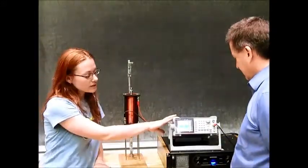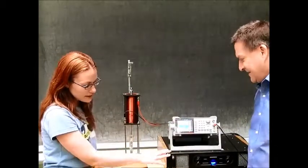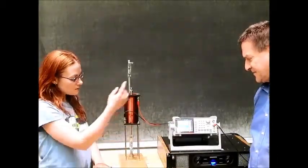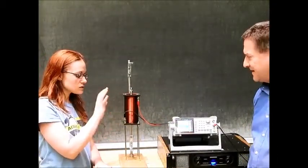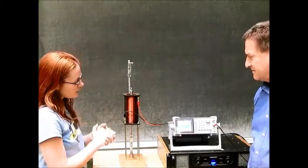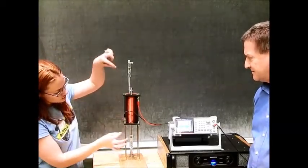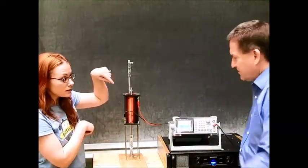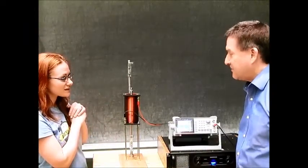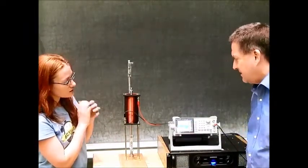All right, so we have a function generator that we will send the signal through a power amplifier, which we will port into a 500-turn solenoid here. And we have, in the center of the solenoid, a solid... Sorry to interrupt. This produces a magnetic field that oscillates up and down.